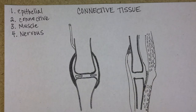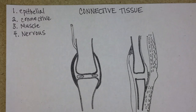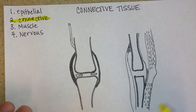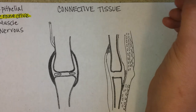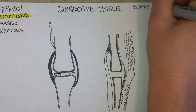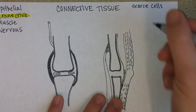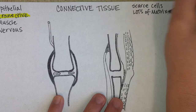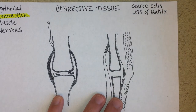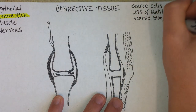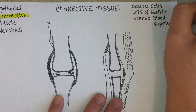So in connective tissue — and let's highlight connective as the focus of this page — connective tissue is well known for the fact that it has scarce cells, meaning not very many, lots of matrix, which we'll explain in a moment, and usually a scarce blood supply compared to other tissues like epithelial, for example.